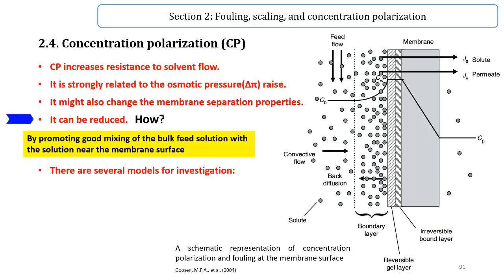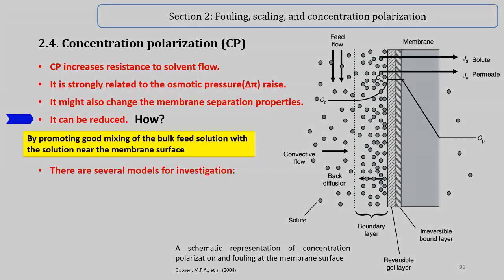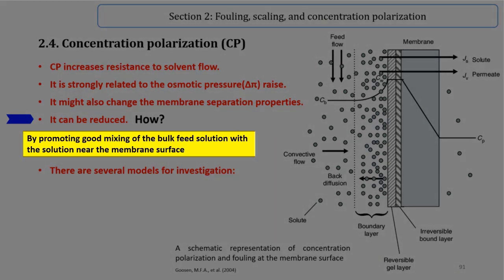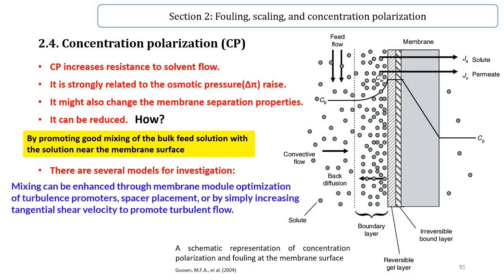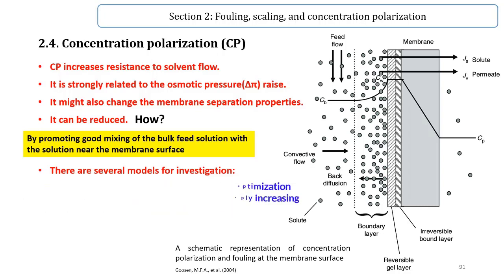Concentration polarization cannot be avoided in the membrane process, but it can be minimized by various methods. The extent of concentration polarization can be reduced by promoting good mixing of the bulk feed solution with the solution near the membrane surface. Mixing can be enhanced through membrane module optimization of turbulence promoters, spacer placement, or by simply increasing tangential shear velocity to promote turbulent flow.